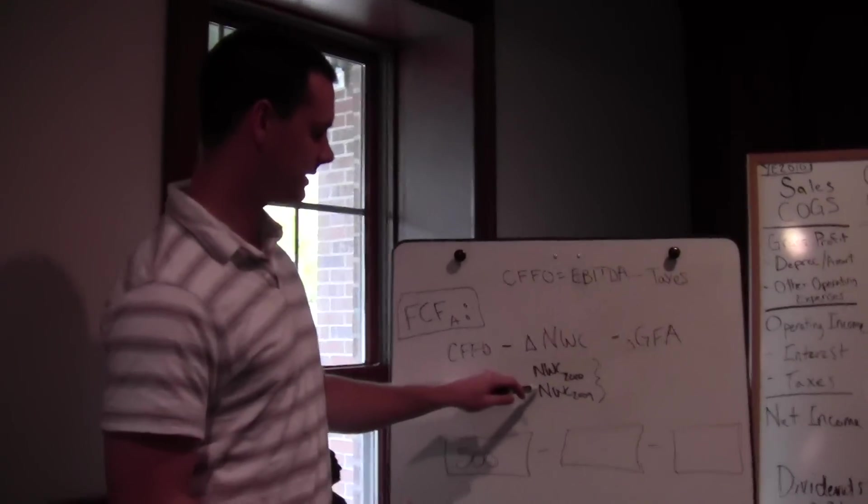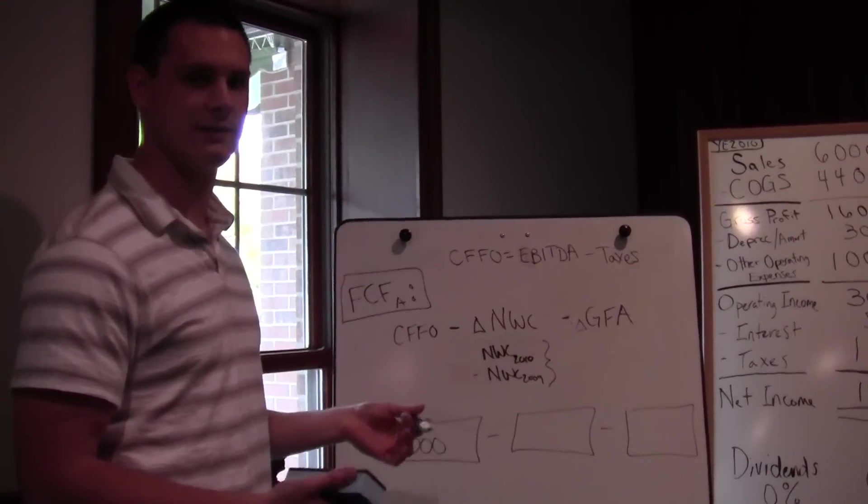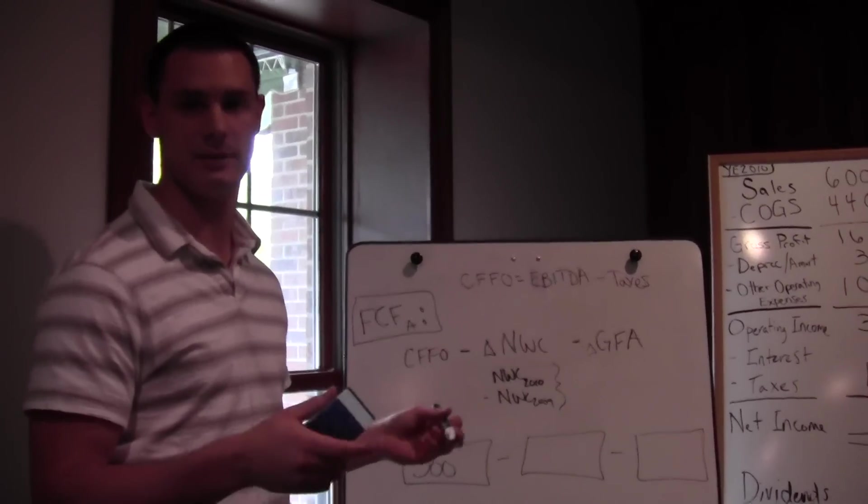Now we want to work on our change in net working capital. We want to take our net working capital from 2010 and subtract out our net working capital from 2009. To do that, we need our balance sheet because we're talking about current assets and our NIBBLEs, our non-interest-bearing liabilities.